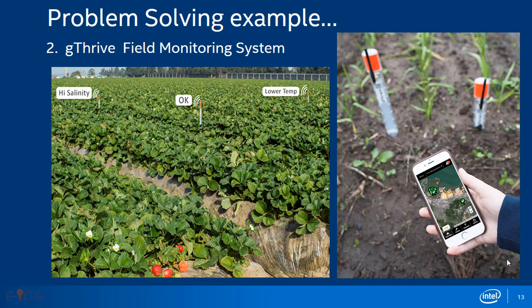Another example is the G-Thrive Field Monitoring System. It addresses the challenge commercial growers face in reliably and easily monitoring their crops for water, fertilizer, and pest management, resulting in improved harvest and reduced operating costs. The G-Thrive Field Monitoring System provides growers real-time measurements for moisture, temperature, and sunlight, and users can monitor it from the app on their mobile.